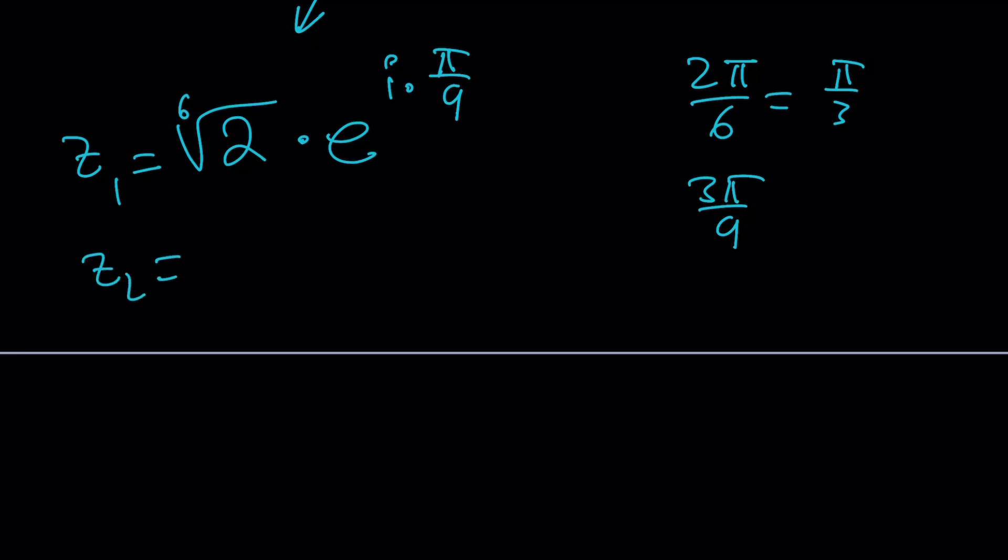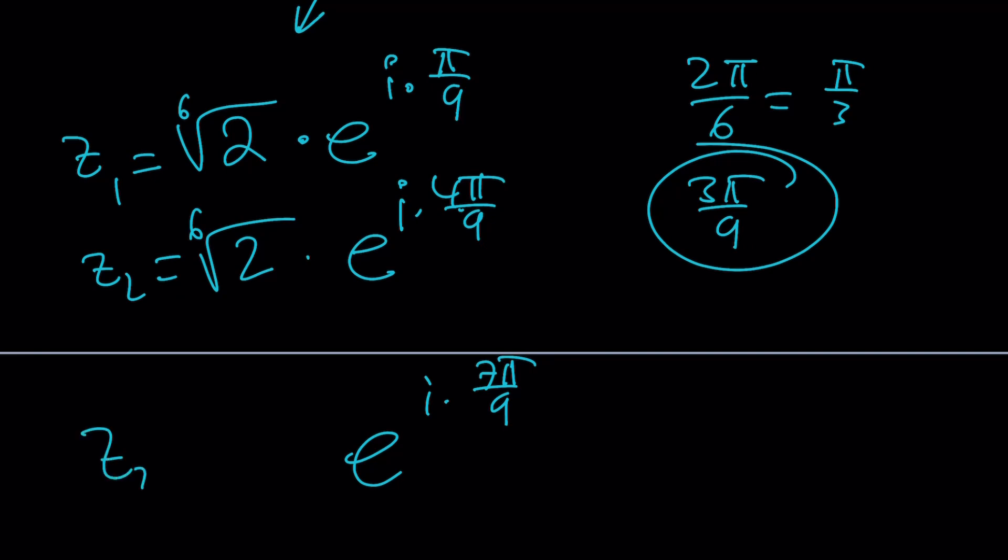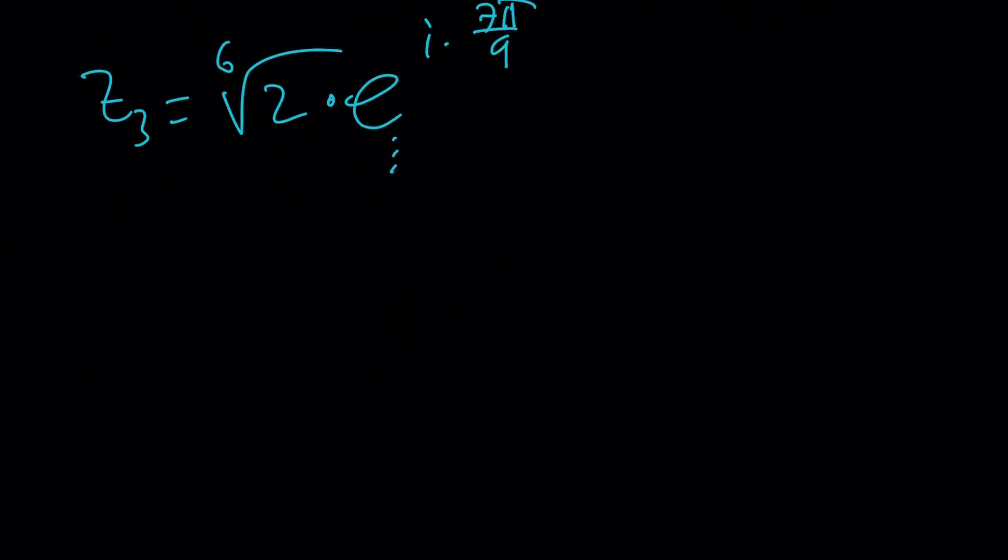It's easier to add. For example, the next one is just going to be the sixth root of 2 multiplied by e to the power, now increase the pi over 9 by 3 pi over 9, you're going to get 4 pi over 9. And increase that again, you're going to get 7 pi over 9, and then 10 pi over 9, 13, so on and so forth. And that'll give you all the solutions.